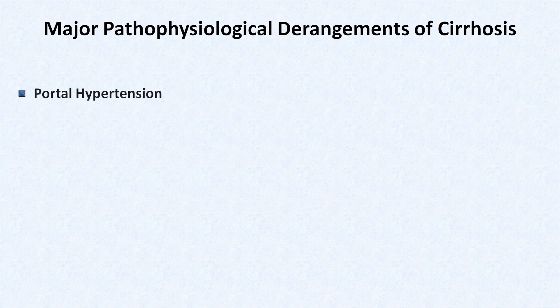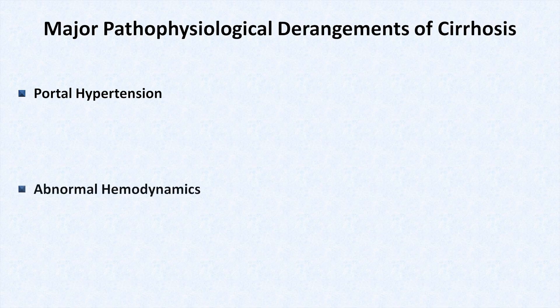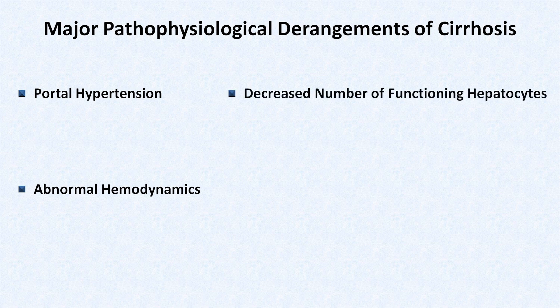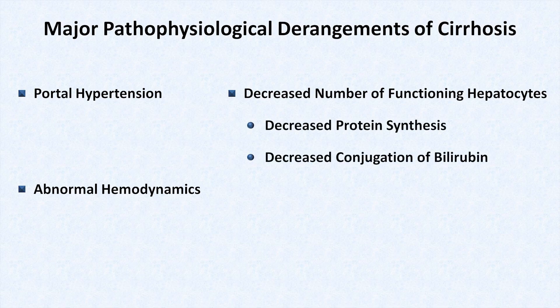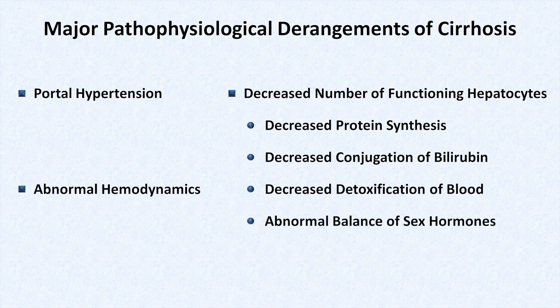The physical findings of cirrhosis can be categorized based upon which of the three major pathophysiological derangements are primarily responsible for them. These derangements are: first, portal hypertension, in which increased resistance to flow through the portal venous system leads to high pressure within the portal vein; second, abnormal hemodynamics, which manifests as several abnormalities of the vital signs; and third, a decreased number of functioning hepatocytes. This last category can be further divided into decreased protein synthesis, decreased conjugation of bilirubin, decreased detoxification of blood, and an abnormal balance of the sex hormones.